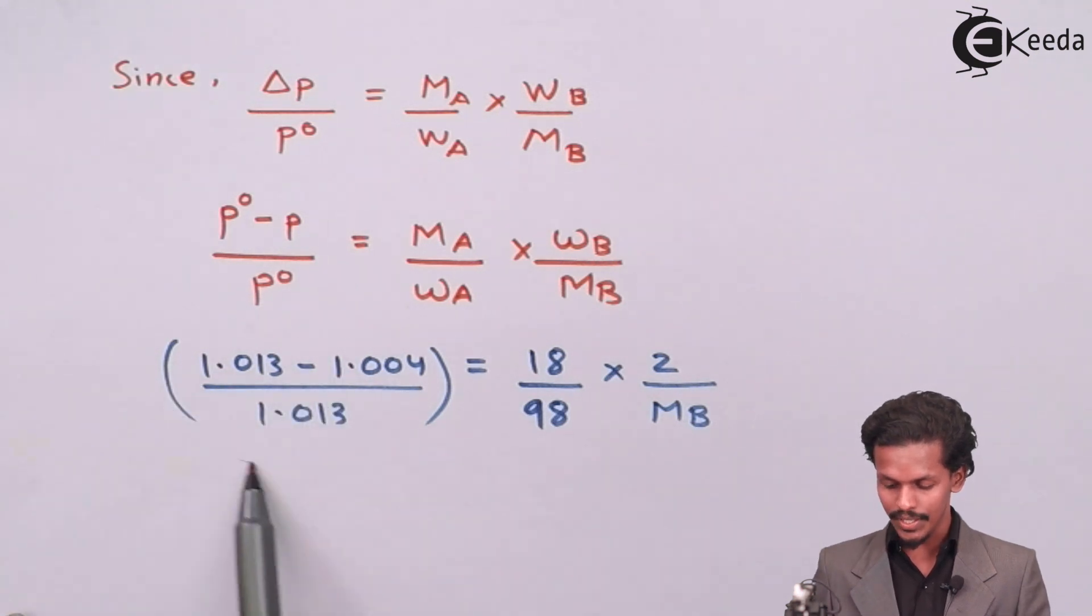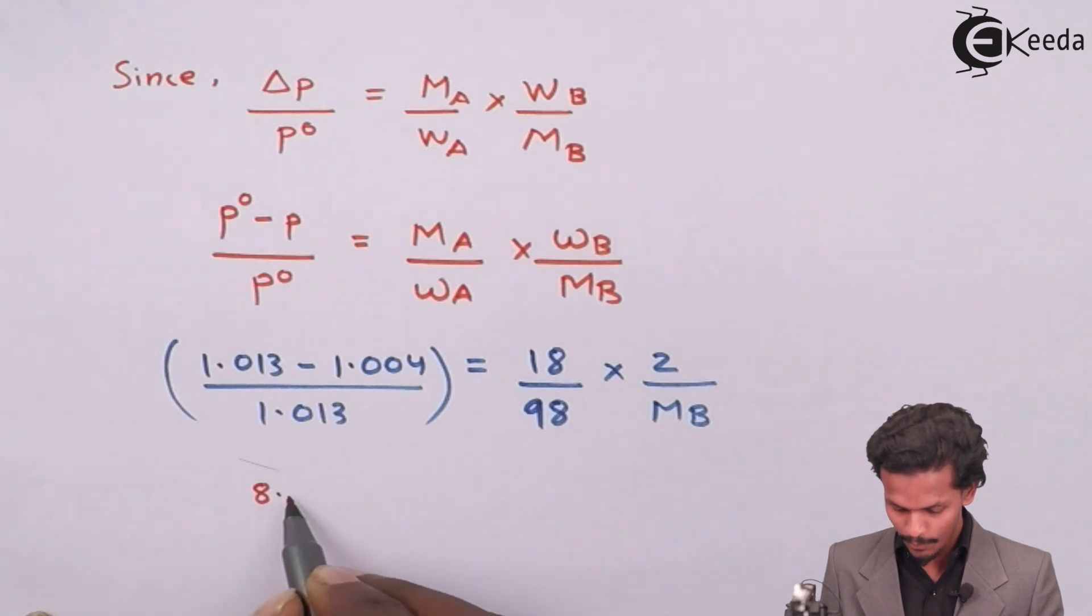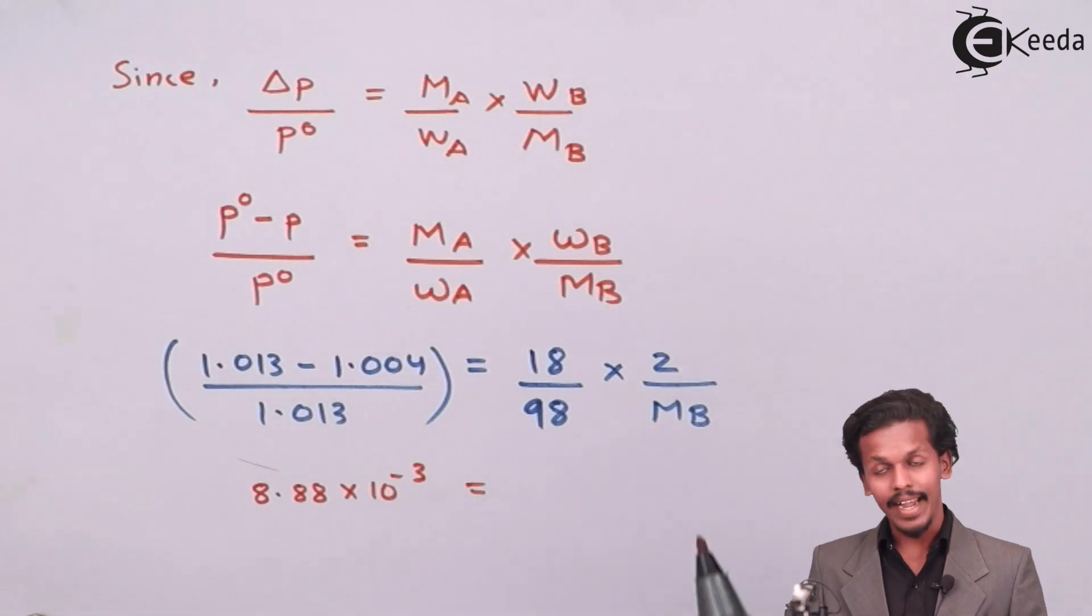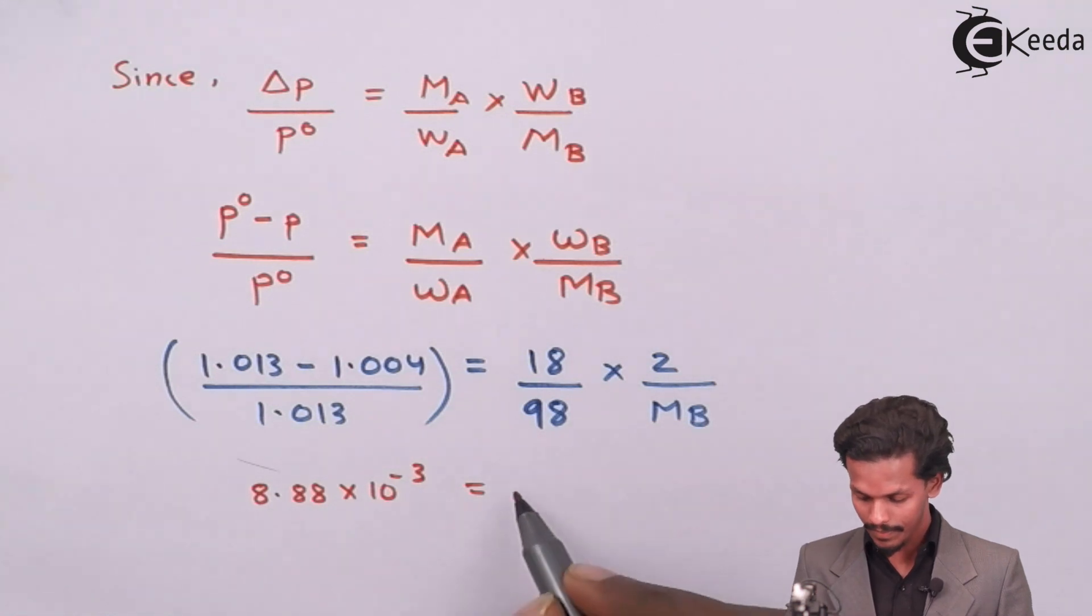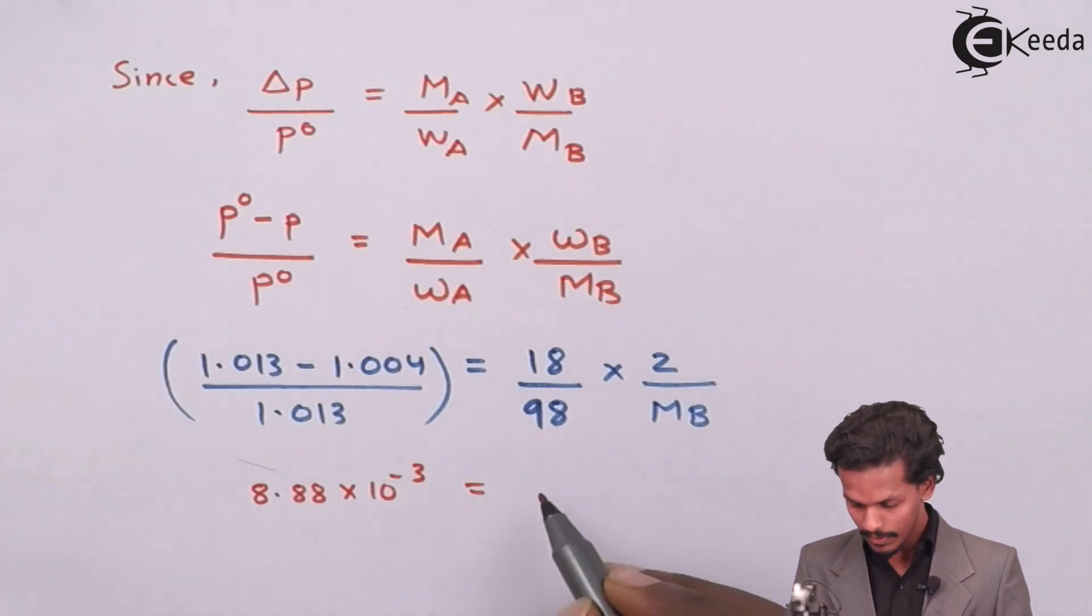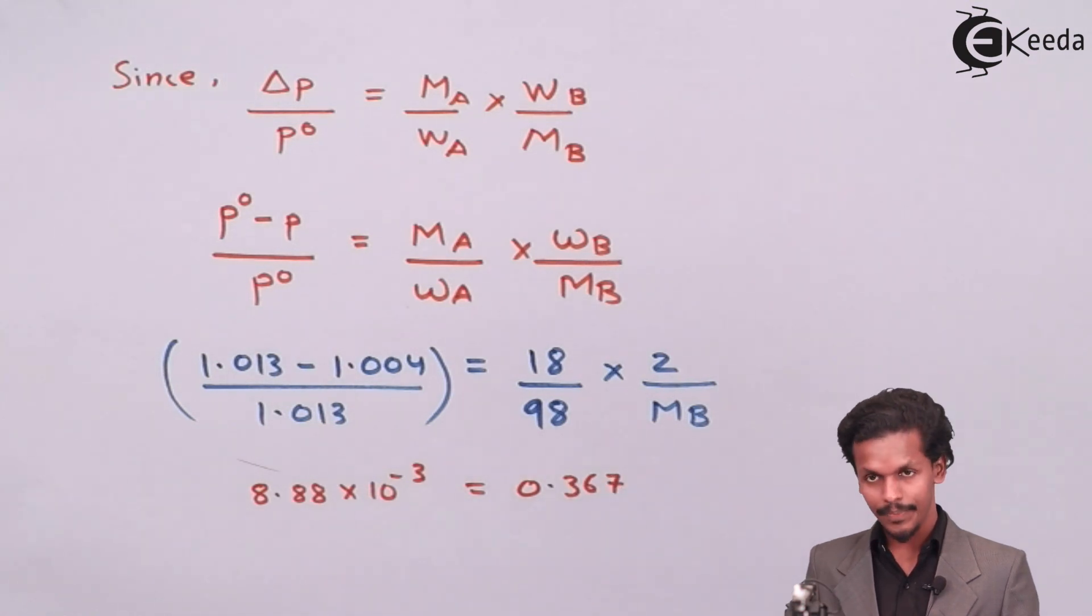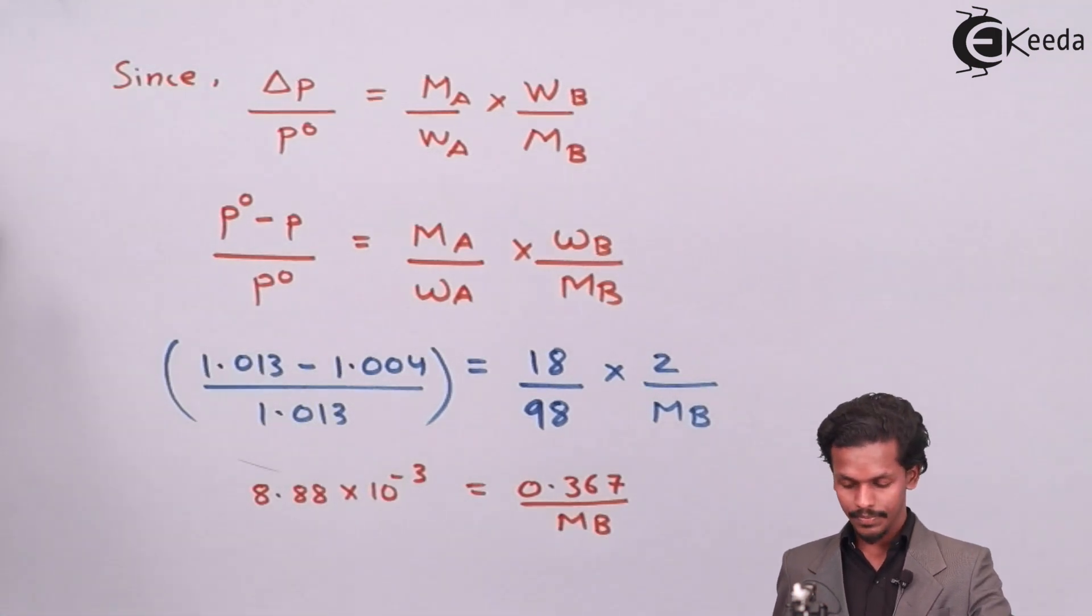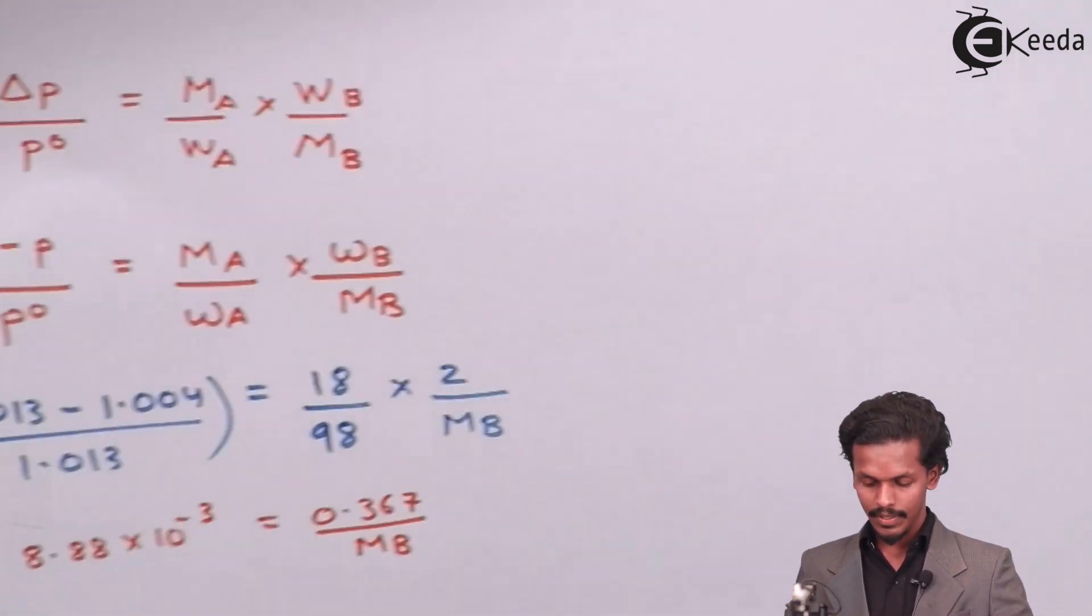So this equation will have a value of 8.88 into 10 raised to minus 3. And that of this value that is 18 into 2 divided by 98 will be 0.367 divided by MB. So now let us substitute the value.